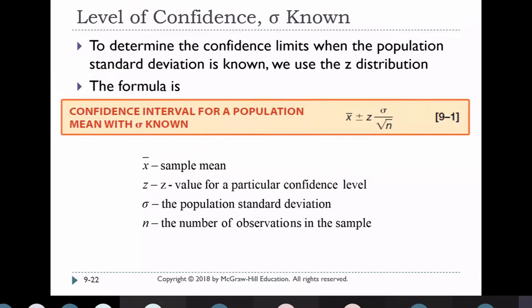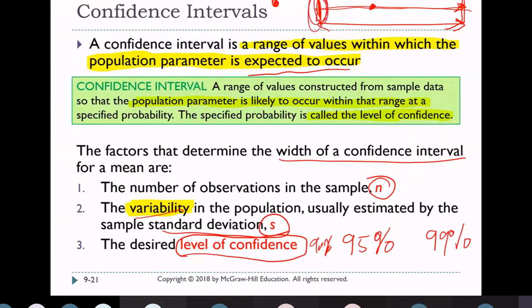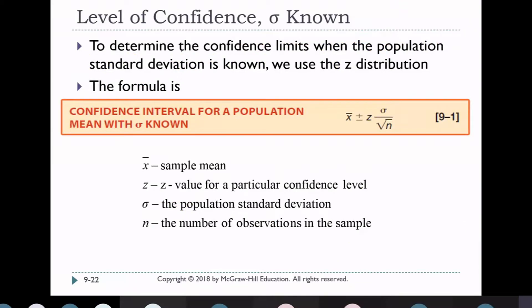The level of confidence determines the confidence limits — the lower limit and upper limit. To find these, I need the sample size N, the standard deviation, and the desired level of confidence. There are two cases.